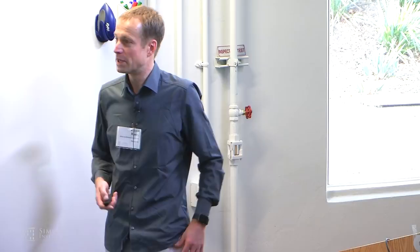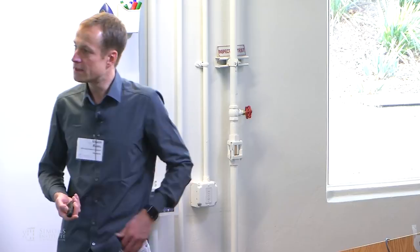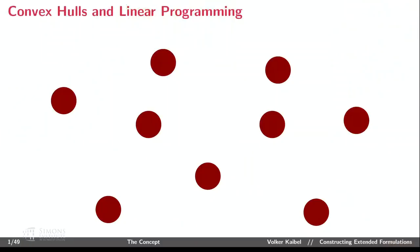But before going to these five or six different methods, let's briefly introduce the concept. This is the right occasion for the first talk of the week. It's all about polyhedral combinatorics. In combinatorial optimization, we want to optimize a linear function over a finite set.